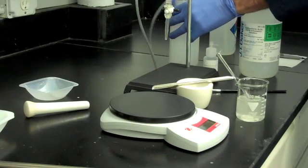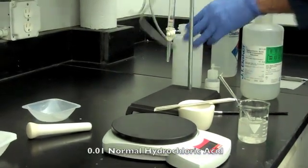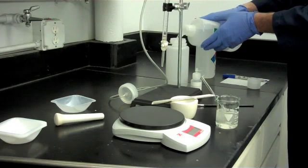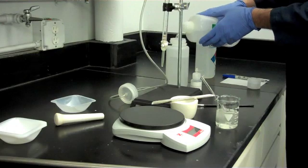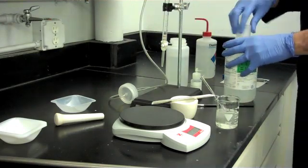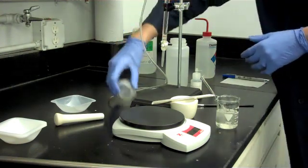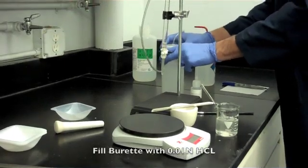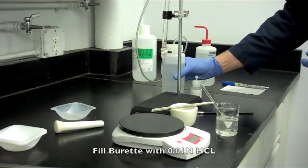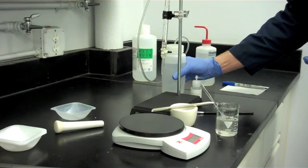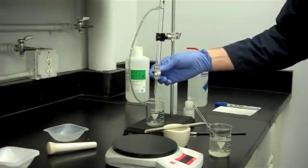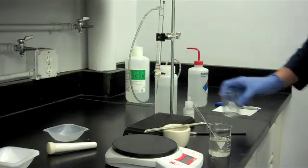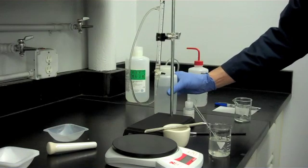Next, fill up the reservoir of the titration kit with the supplied 0.01 normal HCL. Fill the self-serving burette by squeezing the reservoir. Next, clear out any trapped air that may be in the burette. And once again, re-zero the burette with the hydrochloric acid.